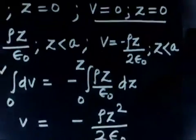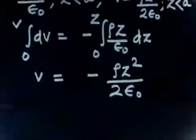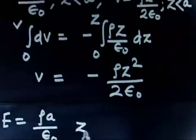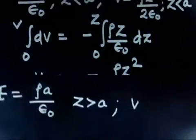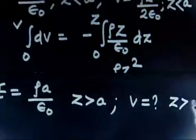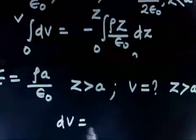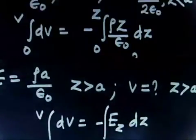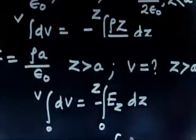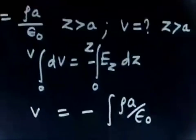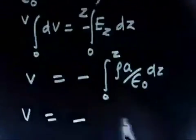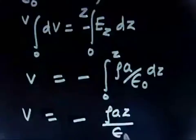For the third region z > A, E = rho A / epsilon-naught. To find V at a point z greater than A, I cannot simply integrate from 0 to z using one function, because the electric field is different in the two sub-intervals 0 to A and A to z.